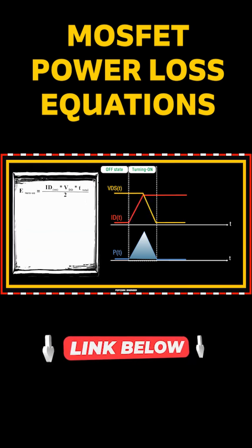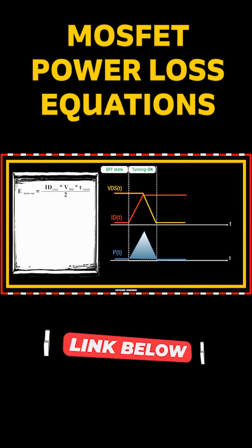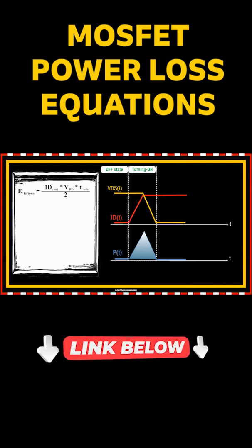The total time is the time it takes for the current to rise plus the time it takes for the voltage to fall. The E_turn_on, the calculated energy here, is not yet the turn-on power losses.